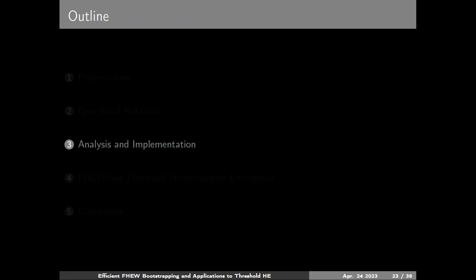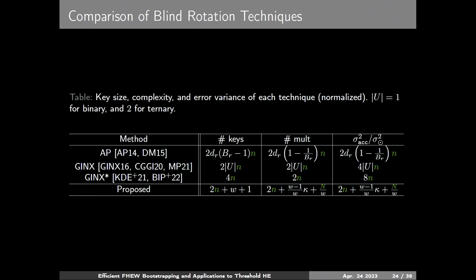Here is a brief analysis of key size, number of multiplications for bootstrapping, and normalized error growth. The best of previous approaches is binary Jinx where u=1. The dominant term in number of keys is similar, the number of multiplications is also similar, but we have smaller error growth.